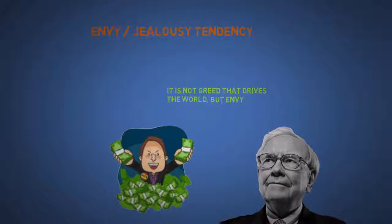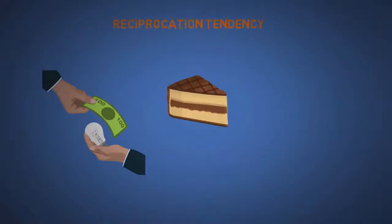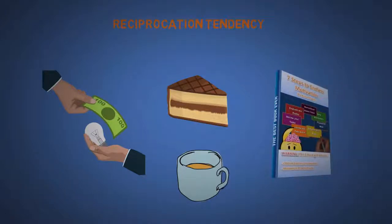The ninth is reciprocation tendency, which is related to the seventh. We tend to want to return the favor when someone gives us something or helps us out. This is why some supermarkets offer free samples, or why car salesmen might offer free coffee. But it is not why my ebook is free. I'm just nice.